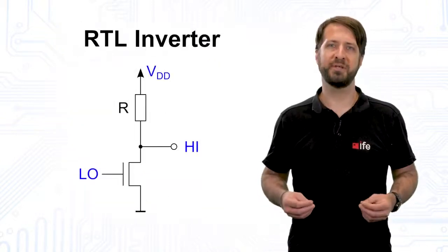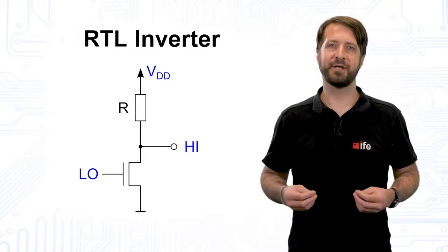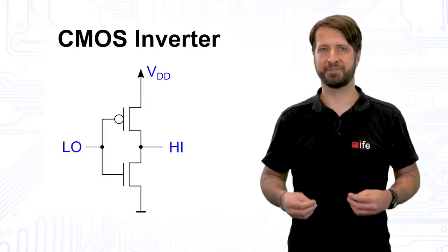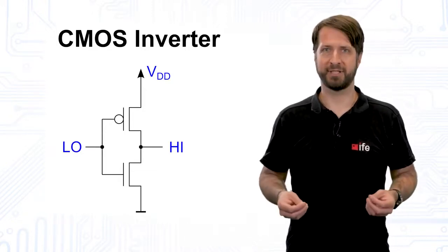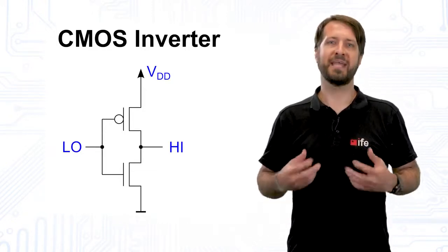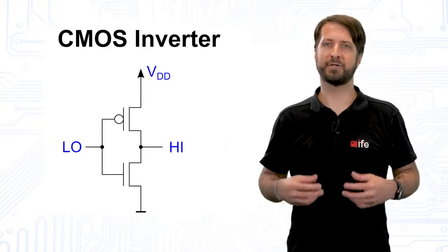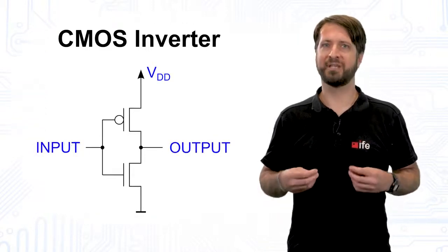CMOS provides the solution for all these problems by replacing the resistor with a PMOS that complements the NMOS, hence complementary metal oxide semiconductor. If the gates of the two transistors are connected, we get a CMOS inverter.